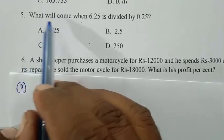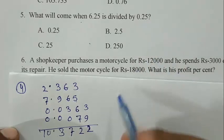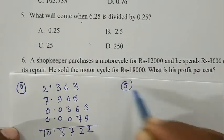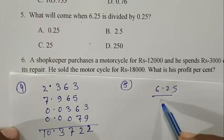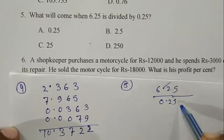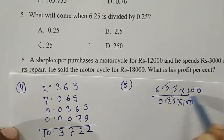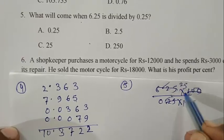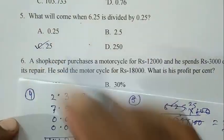B is the right answer. Question number 5: What will come when 6.25 is divided by 0.25? 6.25 divided by 0.25. Eliminating the decimal point, we get 25. C is the right answer.